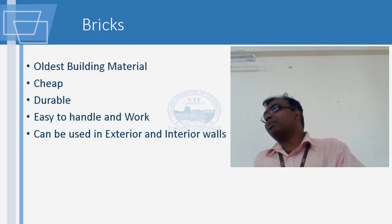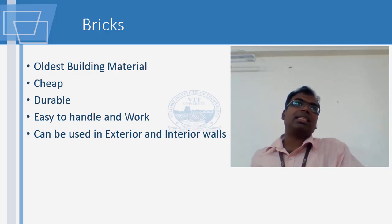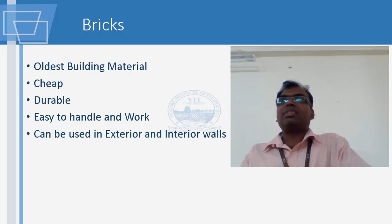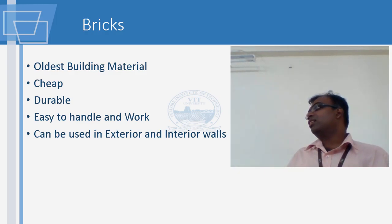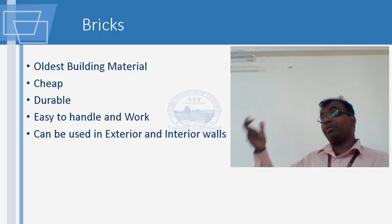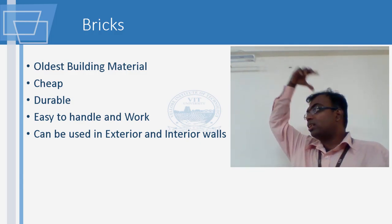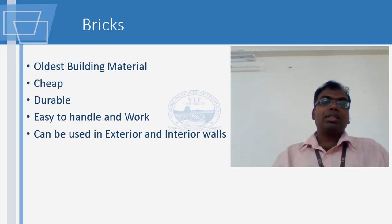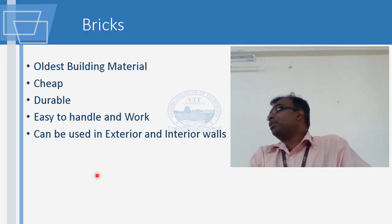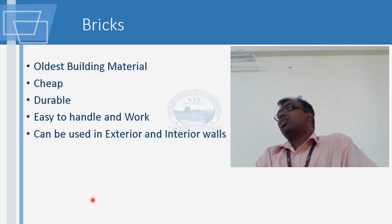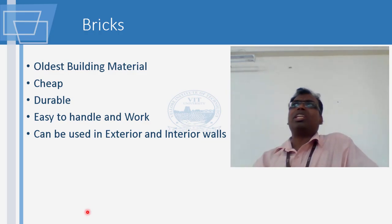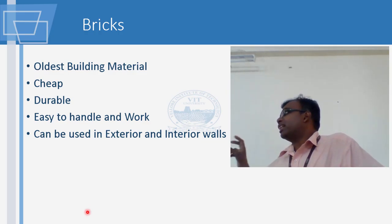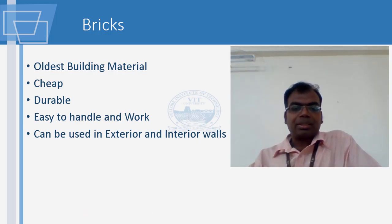Brick is one of the oldest building materials - it is cheap and very durable. Brick is very fire resistant - unlike other materials. Brick is used as a lining for many chimneys. Many steel chimneys have brick as an insulating layer inside. It is also very easy to handle - you see women carrying 10 or 12 bricks on their heads at a construction site.